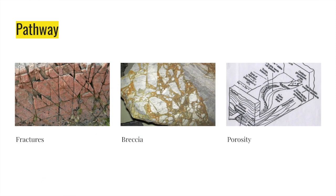There can be several pathways inside the crust and mantle through which the fluids migrate before mineral precipitation takes place. Some of them are fractures, breccia and porosity.